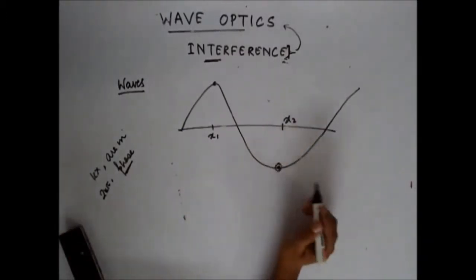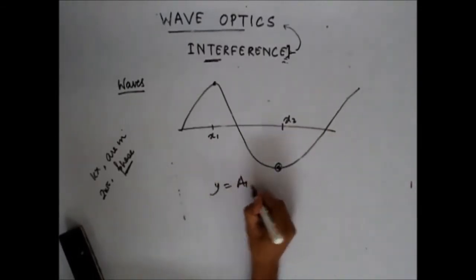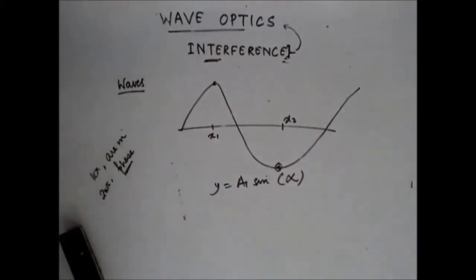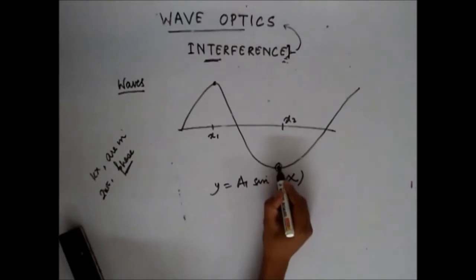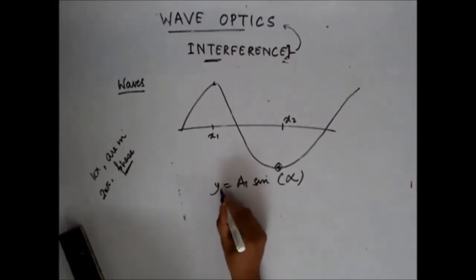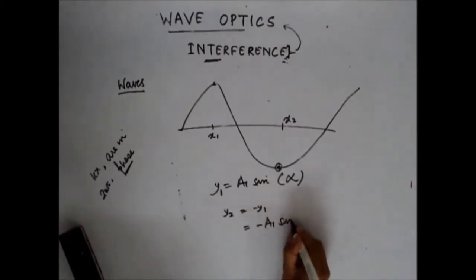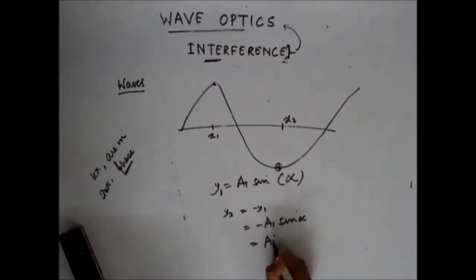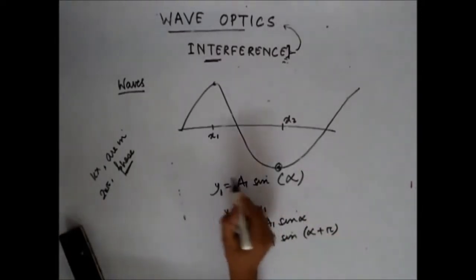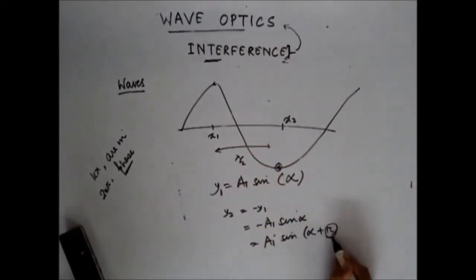Now to reach this position, how much addition in phase should I do? You know that y = a1·sin(α) at x1. You can see that the displacement in the y direction at x2 is just the negative of the displacement at x1. So y2 = -y1, or y2 = -a1·sin(α). I can also write this as a1·sin(α + π). So moving ahead a distance of λ/2 is equivalent to adding a phase of π.